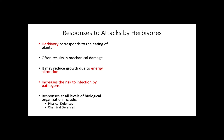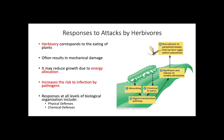Physical defenses include protective structures such as thorns and trichomes, while chemical defenses include substances that are distasteful or toxic compounds. An example of a chemical defense is the well-studied interaction between plants and parasitoid wasps, in which herbivory causes the release of volatile chemicals to attract wasps, which lay parasitoid eggs on the herbivore.